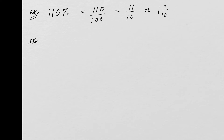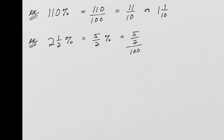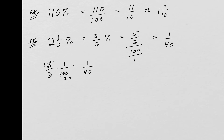What if I give you a percent that's a mixed number, like 2 and a half percent? First, rewrite the mixed number as an improper fraction: 2 times 2 is 4, plus 1 is 5, so it's 5/2 percent. Then to convert to a fraction, remove the percent symbol and place 5/2 over 100. That gives 5/2 divided by 100, which equals 5/2 times 1/100. Simplifying, 5 goes into 5 once and into 100 twenty times, giving 1 over 40. So 2½% equals 1/40.